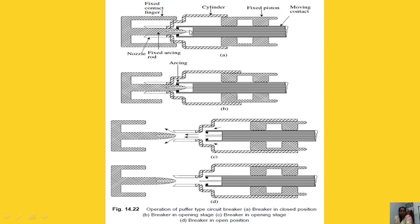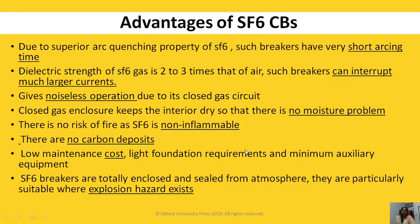A cylinder contains the fixed contact and moving contact. Initially the contacts are closed. As they start separating, whatever gas is inside gets compressed, and that gas at higher pressure is directed onto the arc, so the arc gets extinguished. The moving assembly is connected to the gas reservoir but operates in a closed position during compression.